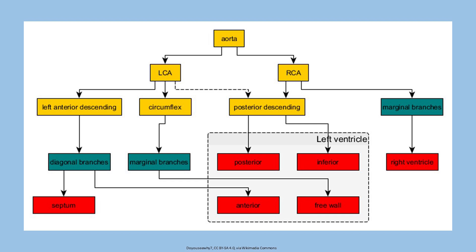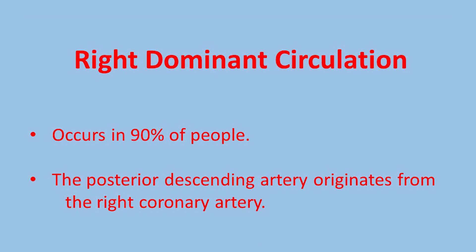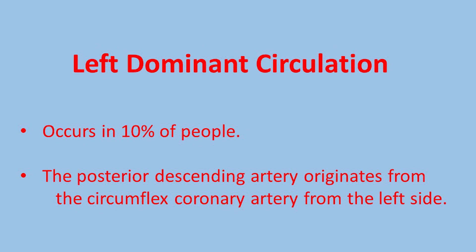The circumflex artery also originates from the left main artery and gives rise to marginal branches supplying the lateral part of the left ventricle. The right coronary artery originates from the right sinus of Valsalva and gives rise to multiple branches supplying the right ventricle. Depending on the origin of the posterior descending artery, the coronary circulation is labeled right dominant or left dominant. If the posterior descending artery originates from the right coronary artery — which it does in 90 percent of cases — the circulation is right dominant. If it originates from the circumflex artery — in 10 percent of people — the circulation is labeled left dominant.